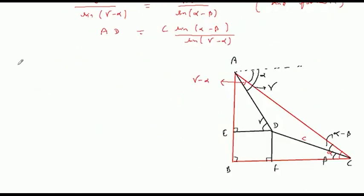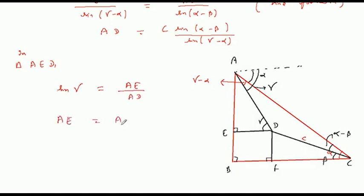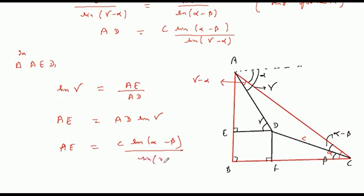अब आते हैं triangle AED में। अगर हम लोग यहाँ sin(gamma) लिखते हैं तो हम लिख सकते हैं: AE/AD। तो AE का value आ जाएगा: AE = AD·sin(gamma)। यहाँ AD का value रख देते हैं: AE = c·sin(alpha minus beta)·sin(gamma)/sin(gamma minus alpha)।